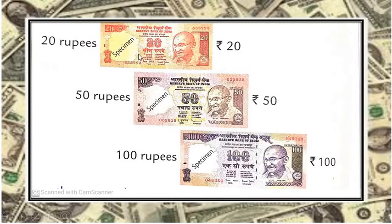20 rupee note. This is 50 rupee note. 100 rupee note. Now observe all this carefully. Here also the value of that money is indicated. And yes, of course, it all is having the image of Mahatma Gandhi on it.